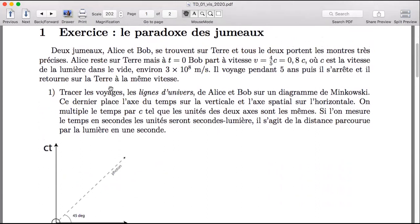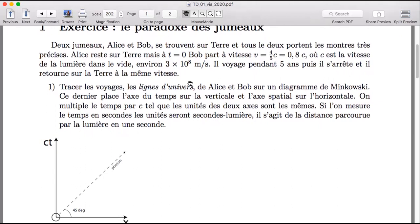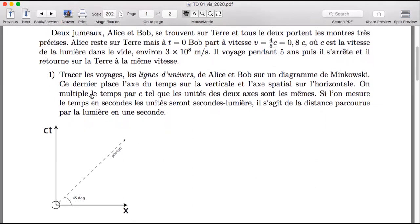So in this first question, we're going to explore this well-known problem of the two twins and one stays at home and one goes off on a voyage near the speed of light and then ages less than the one who stays at home. And we were going to look at that on the Minkowski diagram.